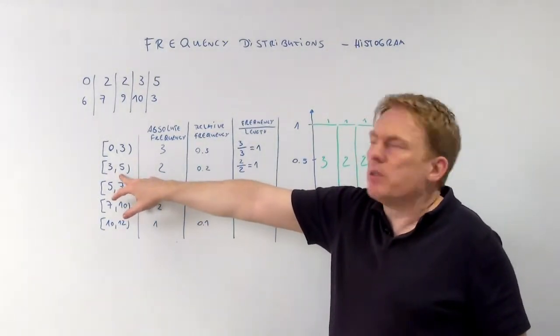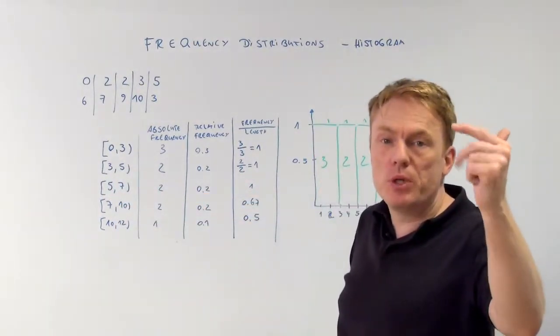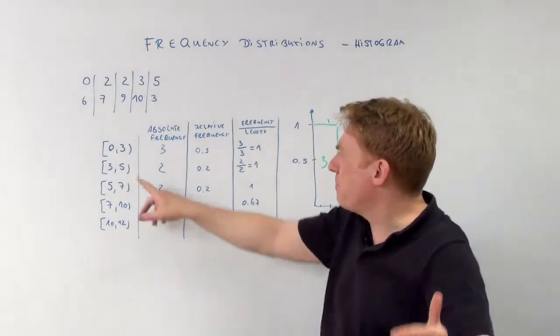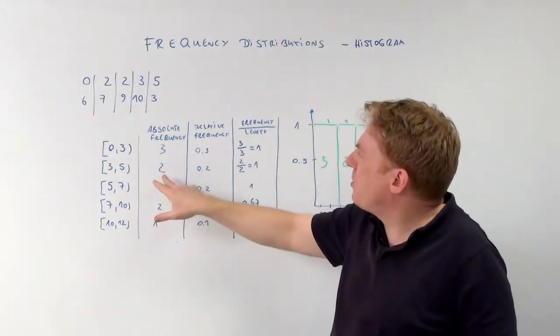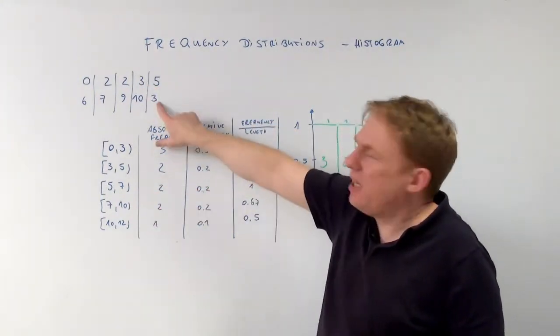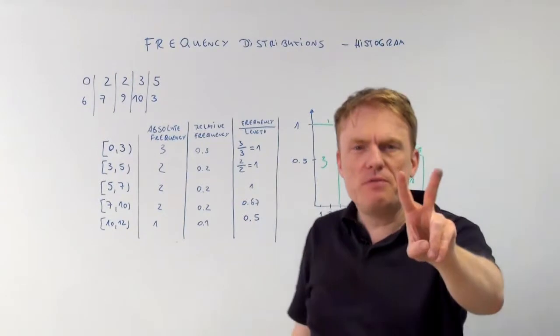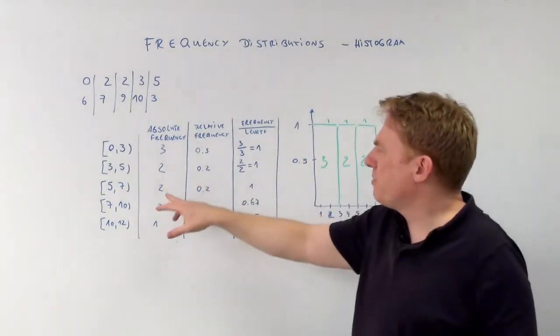In the second interval we can find the numbers 3 and 4, but we won't find the number 5 because 5 is not included. Which means there are 2, it's the 3 and it's this 3, which means two values that are included in the second interval, and so forth.